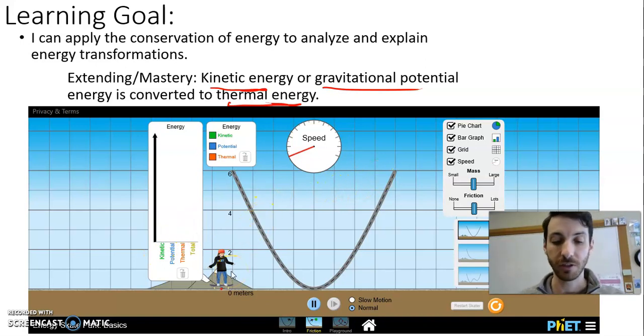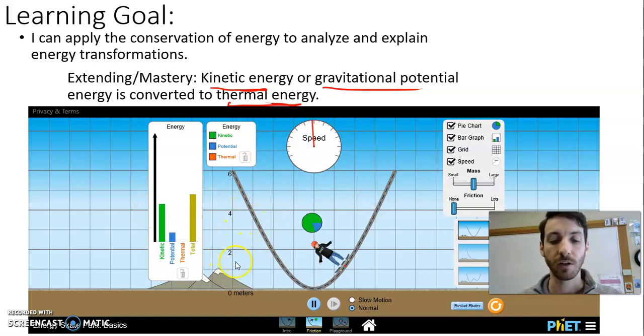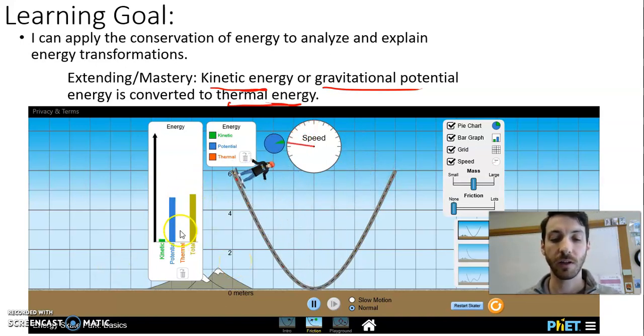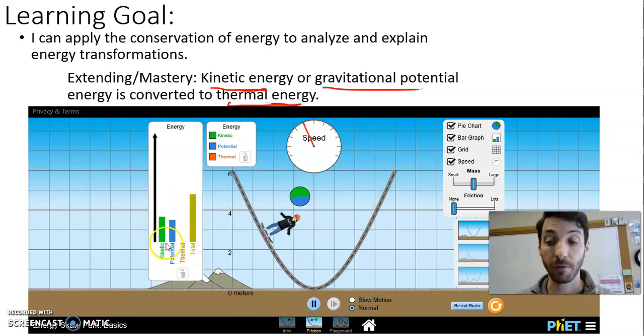Here's our simulation that we're going to use. Before, in our simplified model, we assumed that there was no friction. Here we see that the total energy is not changing, it's the same throughout, and energy is just being converted from one form to the other form.